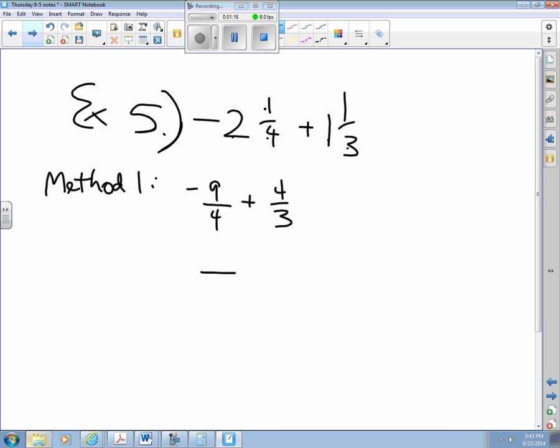My common denominator for this is 12. I times 4 by 3 to get to 12, so I have to times 9 by 3, giving me 27. And I times 3 by 4 to get to 12, so 4 times 4 is 16.